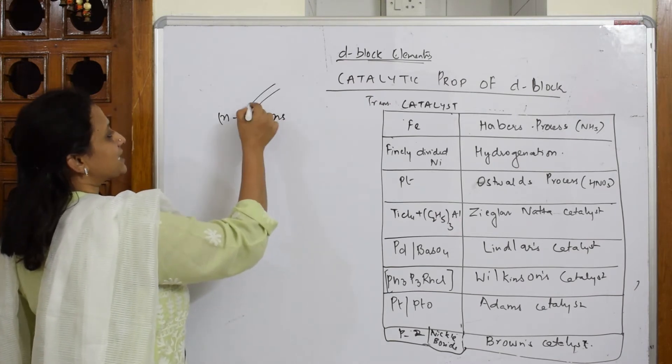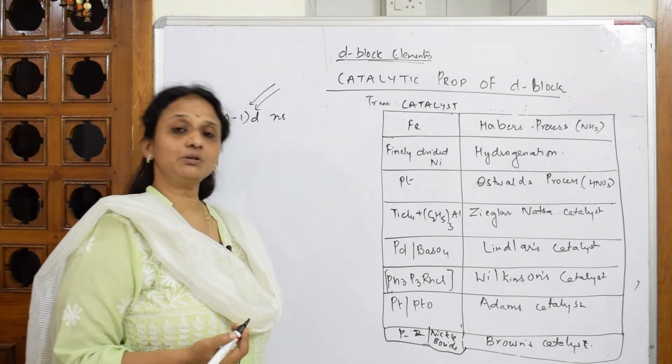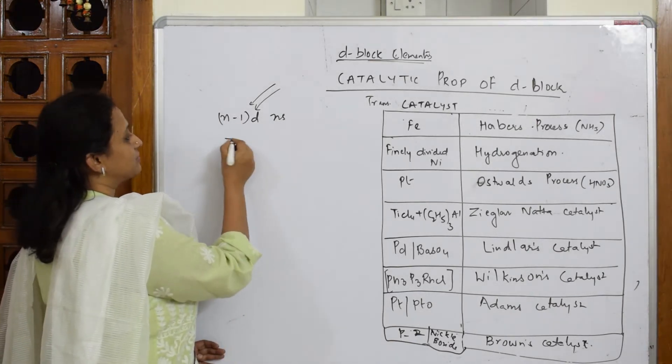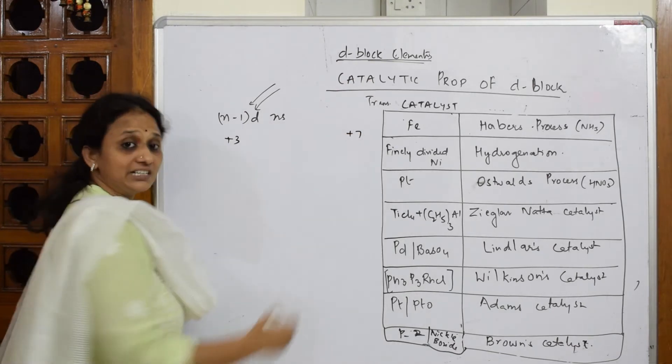When the electron every time keeps adding to this d-block element, it's going to show variable oxidation state. It's going to range when I speak about scandium from plus 3, it's going to range till plus 7 also in 3d series.